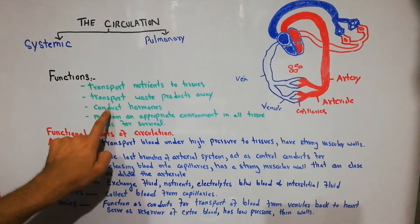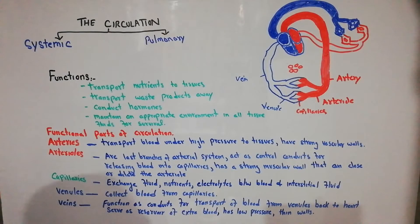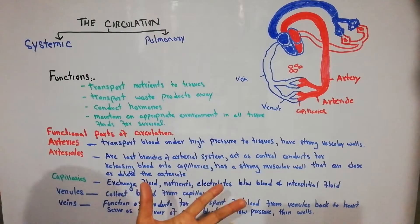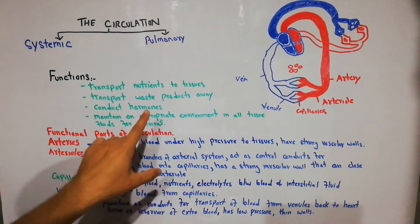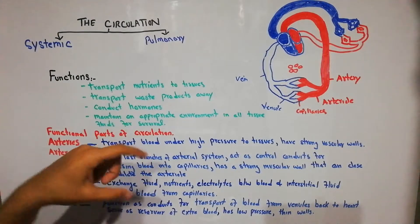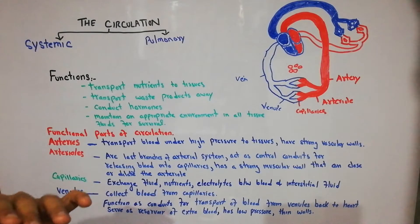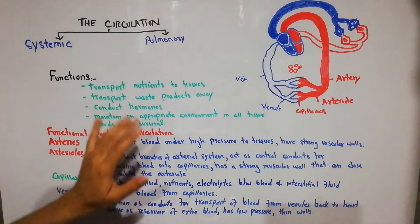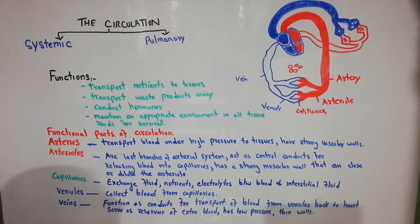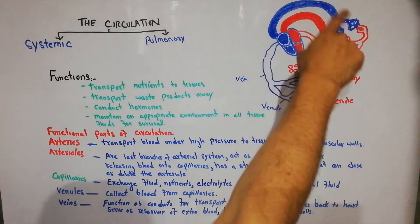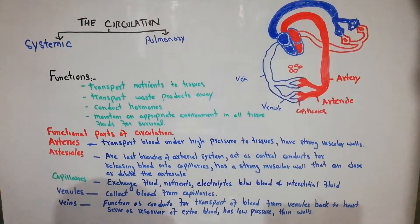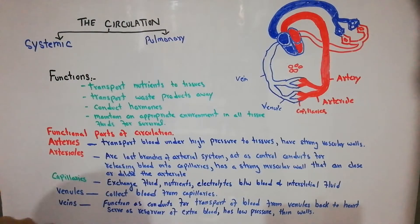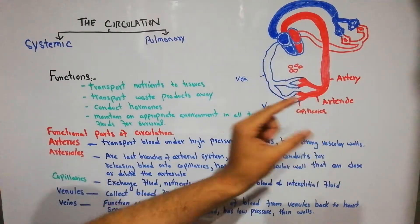Another function of the circulation is to conduct hormones. Different types of hormones, enzymes, and chemicals are generated in the human body and are required in specific parts. They are transported to the point where they are needed with the help of the circulatory system. For example, some hormones needed in the lungs are transported by the pulmonary circuit, and hormones required in the intestines or urinary bladder are transported by the systemic circulation.